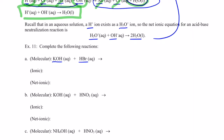These are all going to be double replacement reactions, so the K+ will replace the H+ and vice versa. We end up with KBr — all potassium compounds are soluble, so I put AQ after that — and the H+ is gained by the hydroxide to form H2O, which sticks together, so we put an L after that.